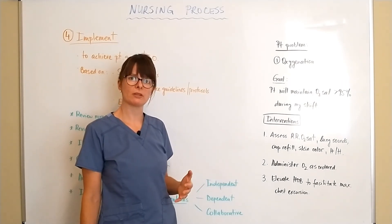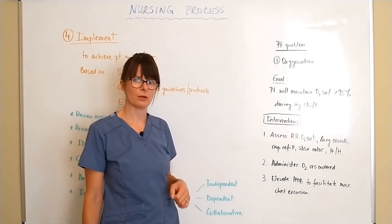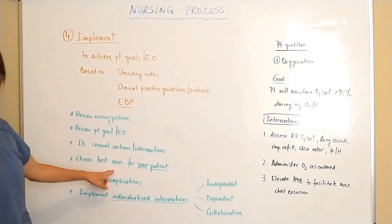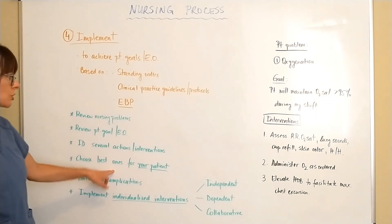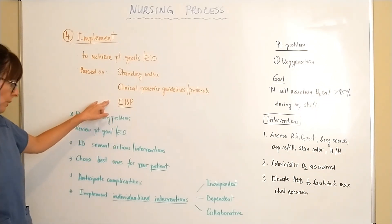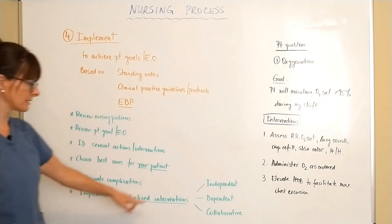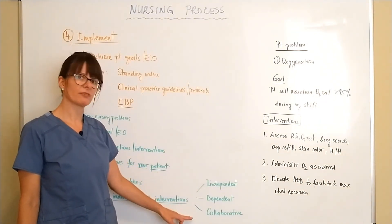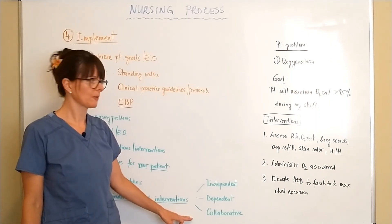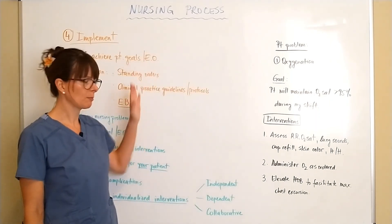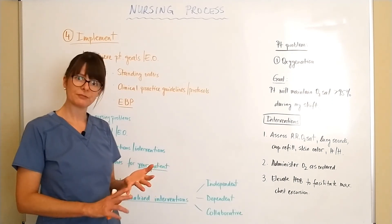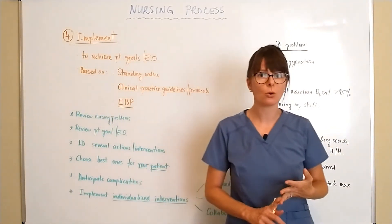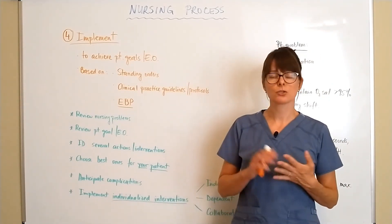Interventions are the meat of the nursing process — where we actually do the things that will get the patient better. They must be individualized, and we choose the best ones from a list of possible interventions based on the evidence. The focus should be on independent interventions first, then dependent and collaborative interventions second. Once interventions are established after assessing, identifying the problem list, and setting goals, we move on to the fifth and final phase: evaluation.